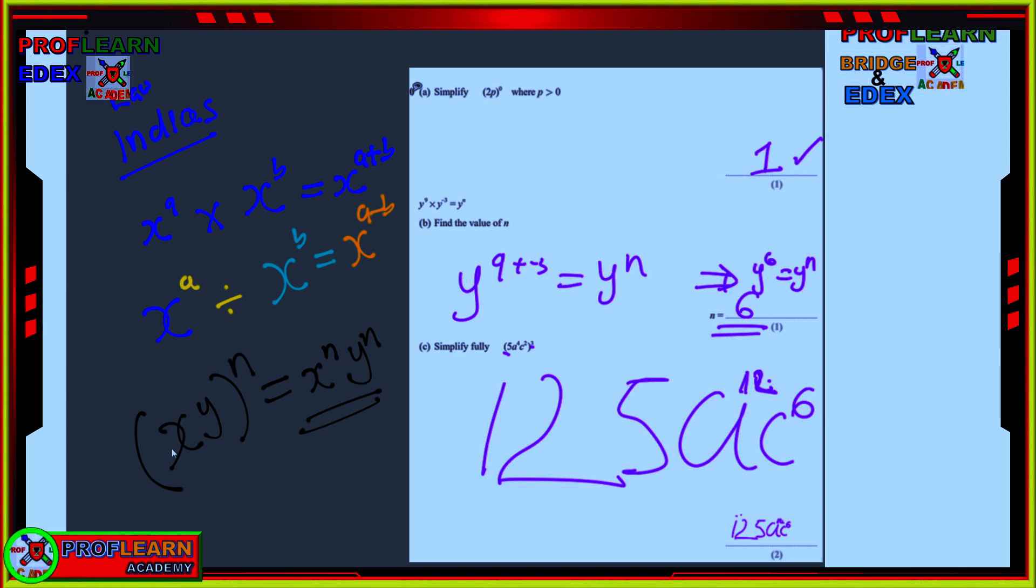And something else also you need to remember, when there is a power and there is a bracket here, all the numbers which are inside this bracket are going to be affected by power. So, it would be x raised to power n, y raised to power n. And including 5 here, 5 is going to be raised to power 3. But a raised to power 4, you are going to multiply 3, and that becomes 5 raised to power 3, becomes 125. A raised to power 4 becomes a raised to power 12, because there is 3 times 4. And c is raised to power 2, so it will be 3 times 2, and that becomes 6.